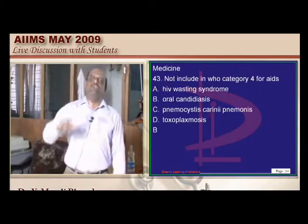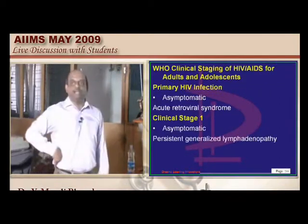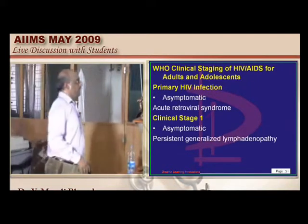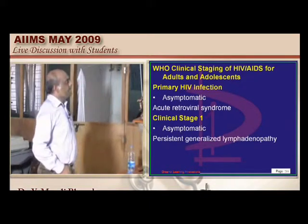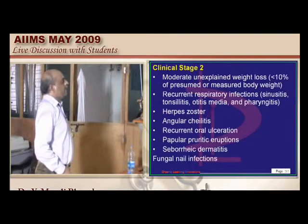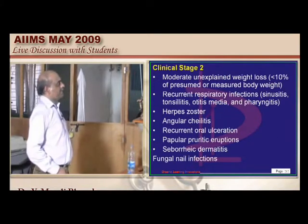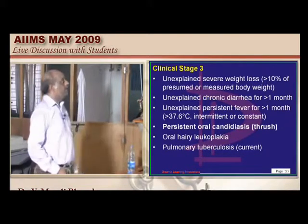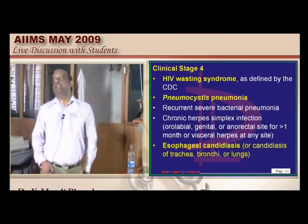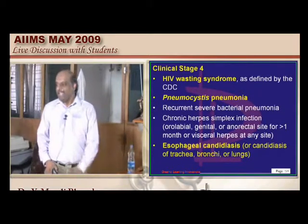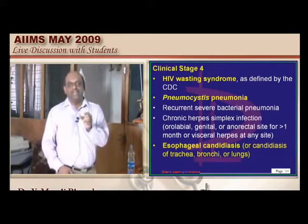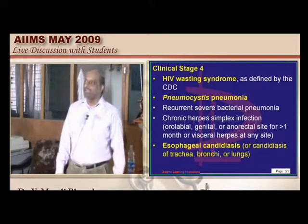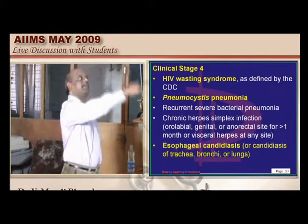What do you mean by category 4 according to WHO classification? Category 1 means asymptomatic generalized lymphadenopathy. Stage 2 includes angular cheilitis. Oral candidiasis is a part of stage 3, not stage 4. In stage 4, you find esophageal candidiasis but not oral candidiasis. The examiner wants to know whether you can distinguish whether oral or esophageal candidiasis appears in which stage.